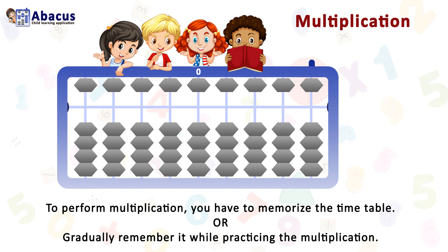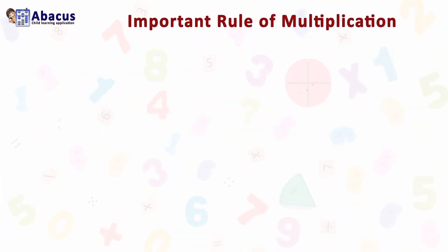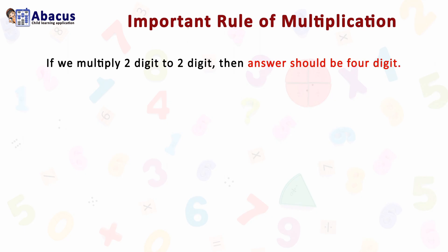Let's see an important rule of multiplication. If we multiply a two-digit number by a two-digit number, the answer should be in four digits. That means if the total number count is four, the answer is in four digits. For example, 52 multiplied by 25 equals 1300 — here 1300 is in four digits.